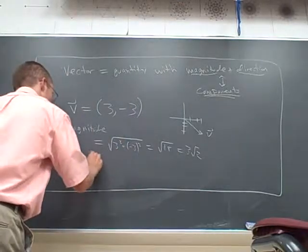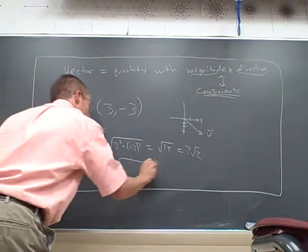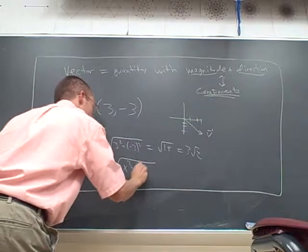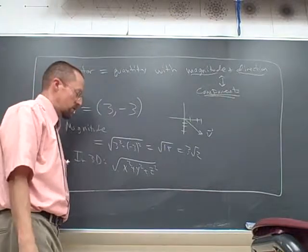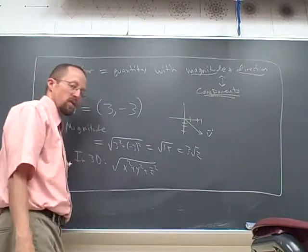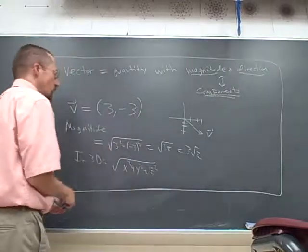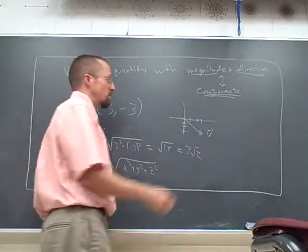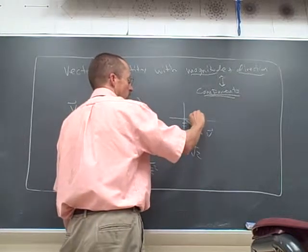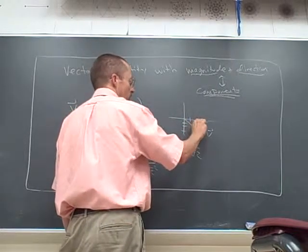In 3D, it's still a Pythagoras type calculation. But you've got the distance formula in three dimensions. Just the x, y, and z components. Sum of the squares and square root. Now what about the direction? Well, there's various ways to describe direction. But in two dimensions, by far the most common thing is we look at the angle to the positive x axis.